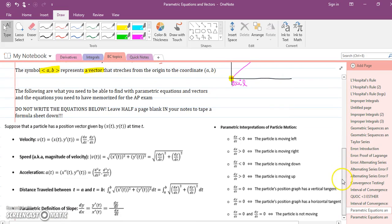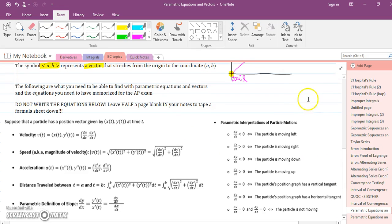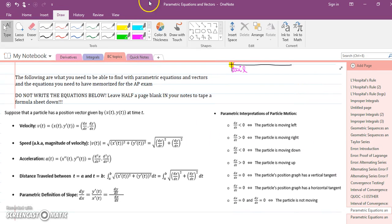Now right here are the things you need to do on the AP exam. The AP exam doesn't cover everything that has to do with parametrics. But these things you need to be able to do. So let's say you have a position vector X, Y. So you have the X position and the Y position together. They make the total position. You have to find the velocity, the speed, which is magnitude of velocity, acceleration, distance traveled. And you have to be able to find slope still.